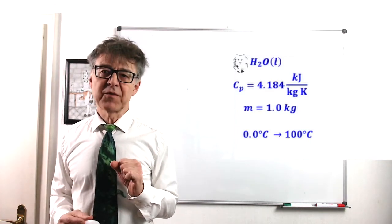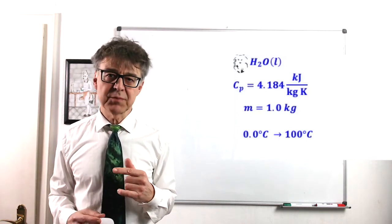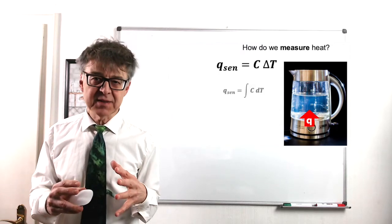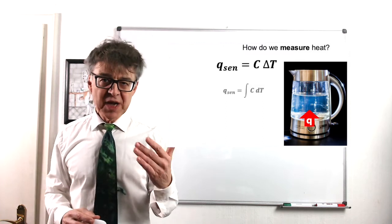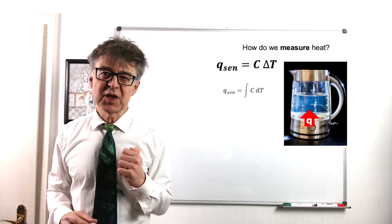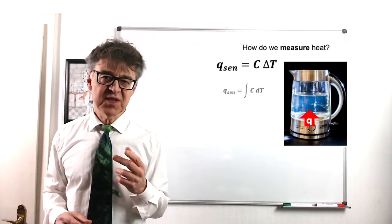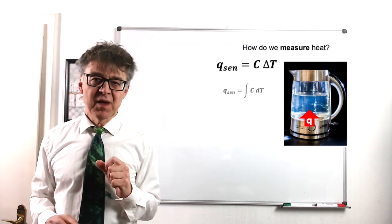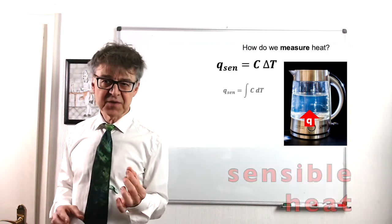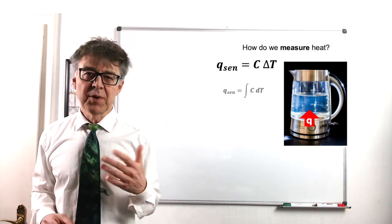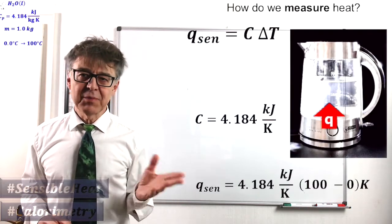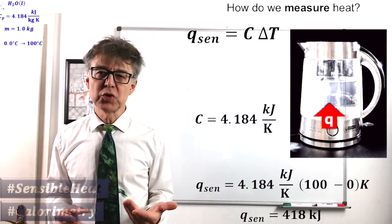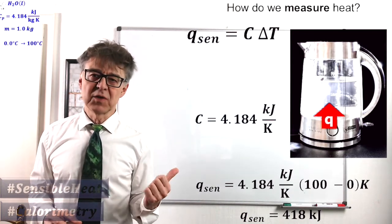Consider that we want to heat one liter of water from 0 centigrade to 100 centigrade, because we want to make tea. This is the process in which the system, the water, absorbs energy as heat. It is an endothermic process. We could measure this heat by using this known equation from physics, Q equals C times delta T. C is the heat capacity, delta T is the temperature difference, final temperature minus initial temperature. This heat is a so-called sensitive heat, because this heat goes along with a change in temperature. Plugging in the heat capacity of water and the temperature change, we end up with 418 kilojoules. We need 418 kilojoules of heat to heat up 1 liter of water from 0 to 100 centigrade.